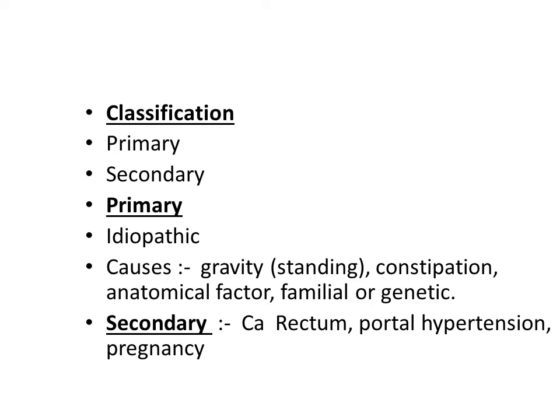Classification: basically we can divide them into two types — primary or secondary hemorrhoids. Primary are idiopathic. The cause is said to be gravity — the standing position that the human being takes. Because of gravity, there is little flow of blood in the upward direction. A second factor is the anatomical location of the veins in the submucosa, which get constricted when stool passes, causing them to dilate. Constipation is also a factor, as are familial and genetic predisposition.